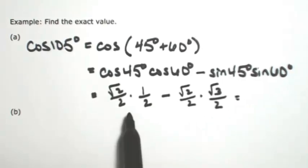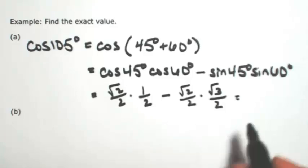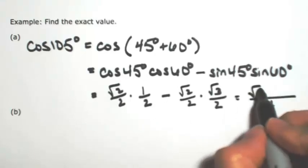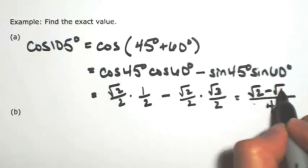So putting this together, multiplying the denominators, I get a 4 on each of those, so that's our common denominator. So I can just add the numerators of square root of 2 and then minus square root of 6.